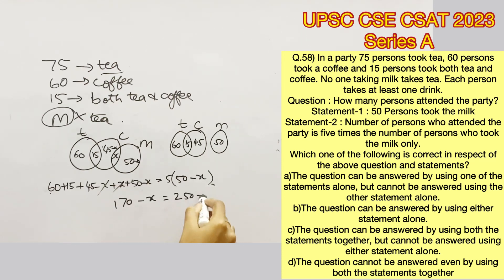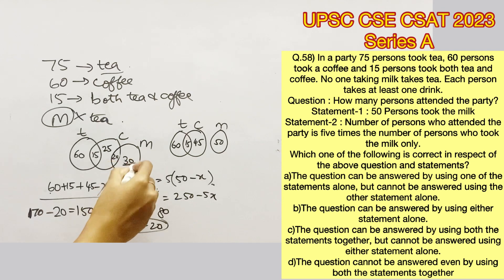Anyways, we will solve this equation. We would get X as 20, which means the total number of people would be 170 minus 20, that is 150. You can cross check in the Venn diagram as well. Substitute 20 in the place of X. You will get that 30 people chose milk alone. So 30 into 5 will give us 150, that is the total number of people.